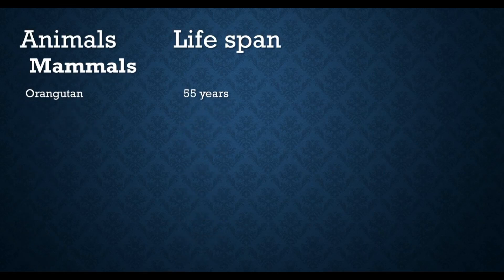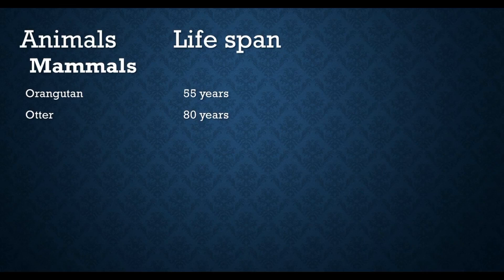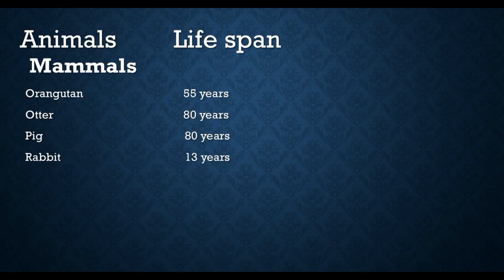Orangutan lifespan is 55 years. Otter lifespan is 80 years. Pig lifespan is 80 years. Rabbit lifespan is 13 years.